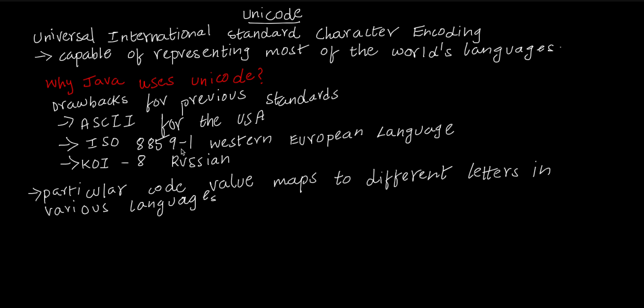What we want to overcome is to represent all of these characters consistently. That is why we have Unicode — Universal International Standard Character Encoding. Unicode represents most of the world's languages in a machine-understandable format, so that one code value maps to the same character across all languages.